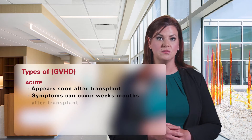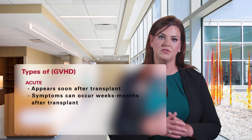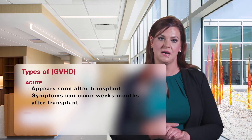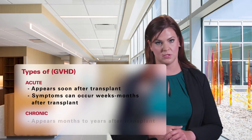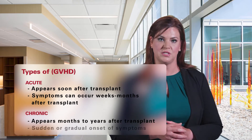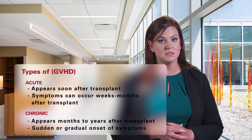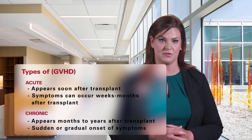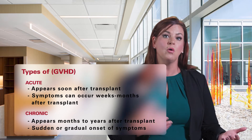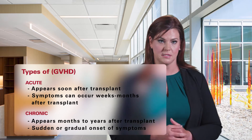Acute GVHD usually appears soon after the transplant, a few weeks to months after receiving the donor cells. Chronic GVHD can appear months to years after the transplant and can have a sudden or gradual onset.